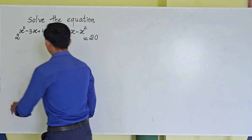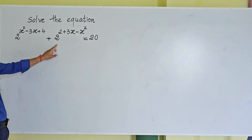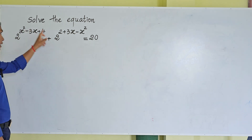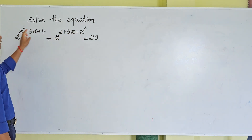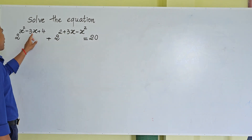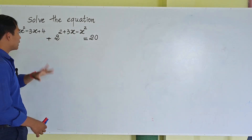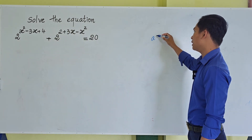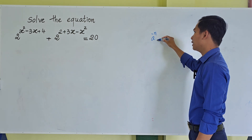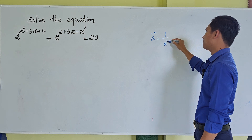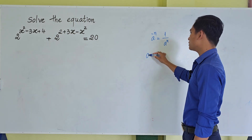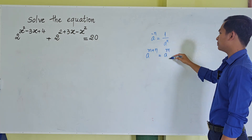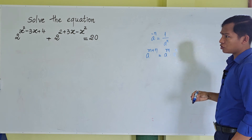Now let's look at our equation. The base is 2, and the exponents are x² and -x², and also 3x with opposite signs. To solve this equation, I will use two formulas: first, a^(-n) = 1/a^n; and second, a^(m+n) = a^m · a^n.